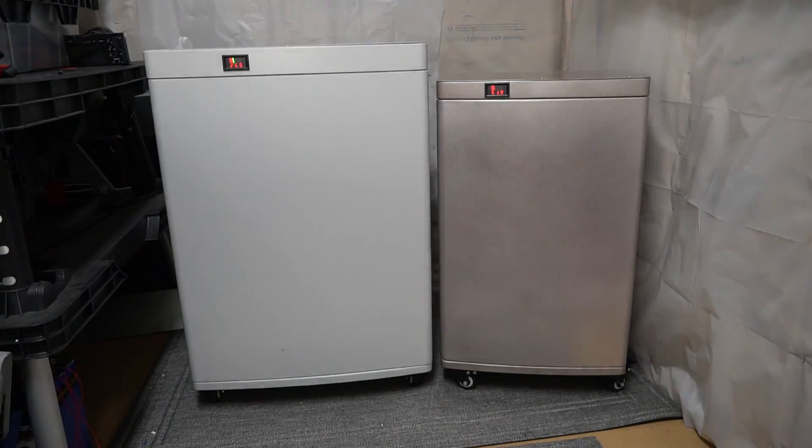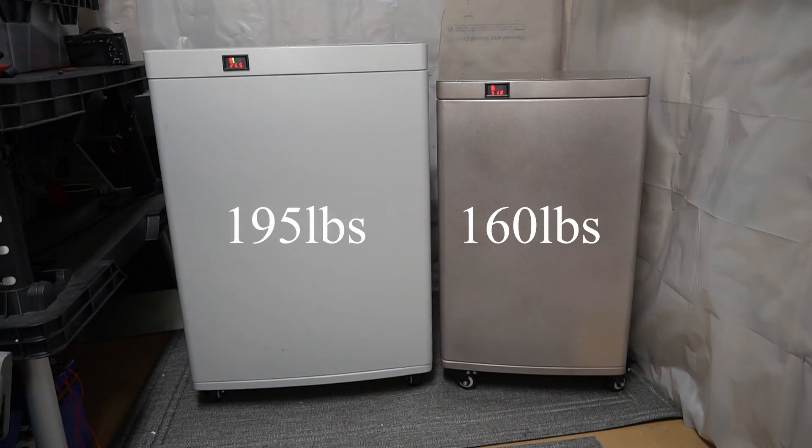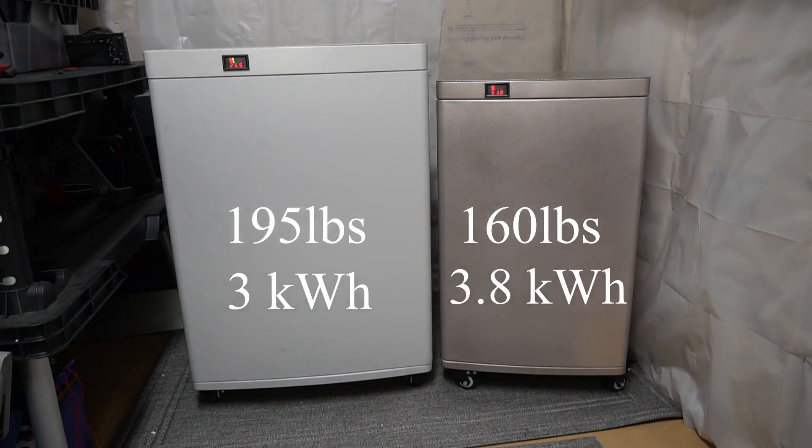First, let's compare the size and the weight for the capacity. Clearly, the battery on the left is wider, taller, and heavier than the one on the right. But get this, the battery on the left has a smaller capacity. It has 3 kilowatt hours, and the one on the right has 3.8 kilowatt hours. So if size and weight and space are a consideration for you, then the one on the right is obviously the clear winner.